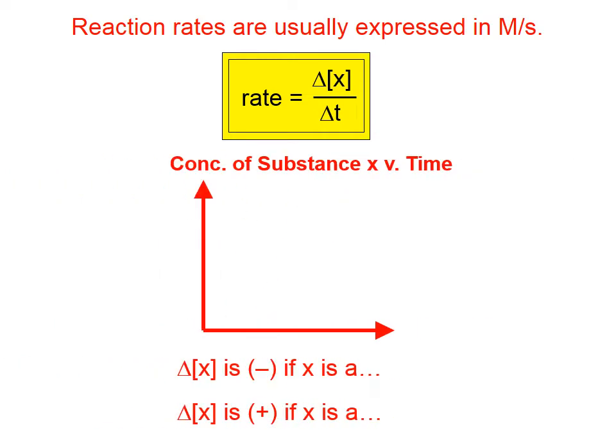If we have the concentration of a substance X versus time, whenever you plot a graph with time in it, time is always on the X-axis. So let's plot the time, usually in seconds, on the X-axis, concentration on the Y-axis.